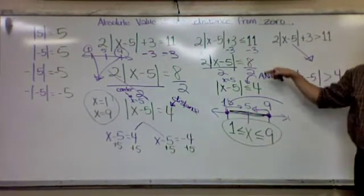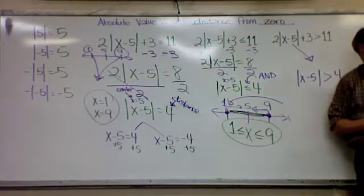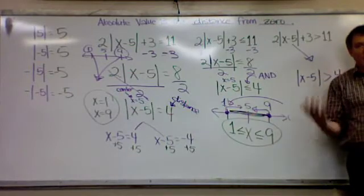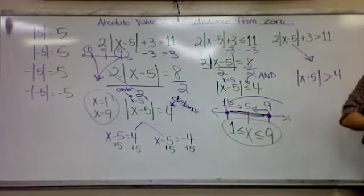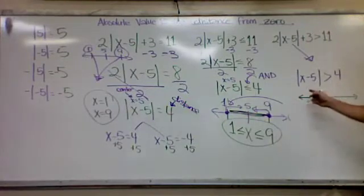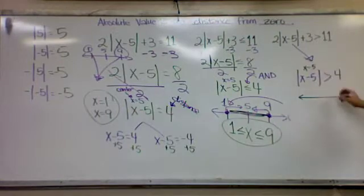We do all these steps and stuff, but I get to this place, greater than 4. Now, I think the simplest way is to draw it on a number line and then write the answer. Where's my center? 5. 5 is what makes it 0. That's my center, so there we go.